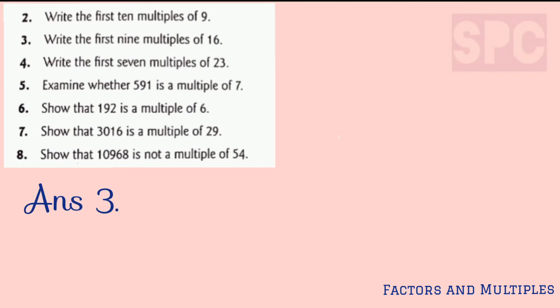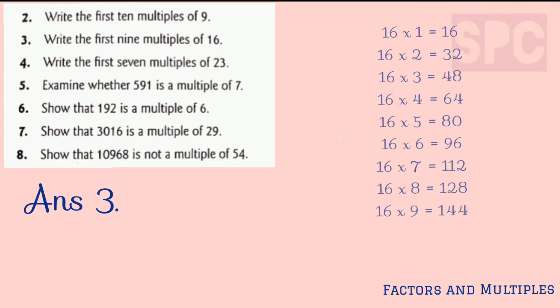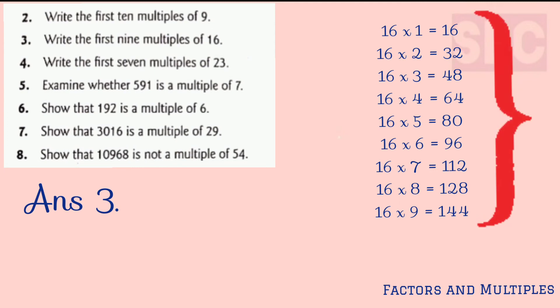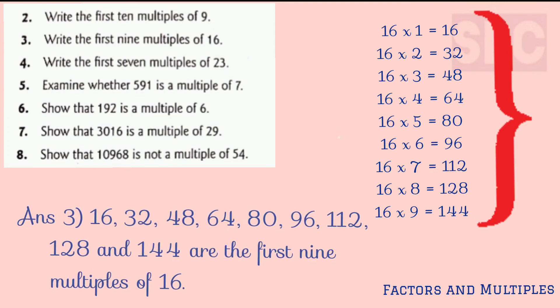Question number 3: write the first 9 multiples of 16. Similarly, we write the table of 16 up to 9 times. So: 16, 32, 48, 64, 80, 96, 112, 128, and 144 are the first 9 multiples of 16.